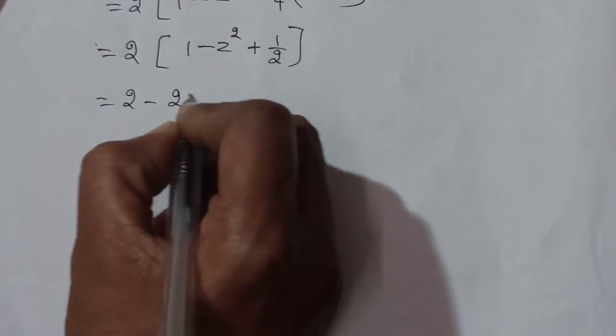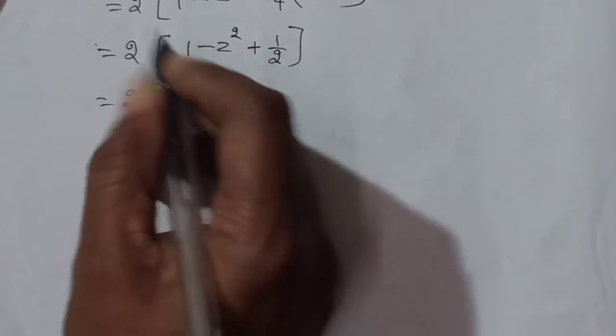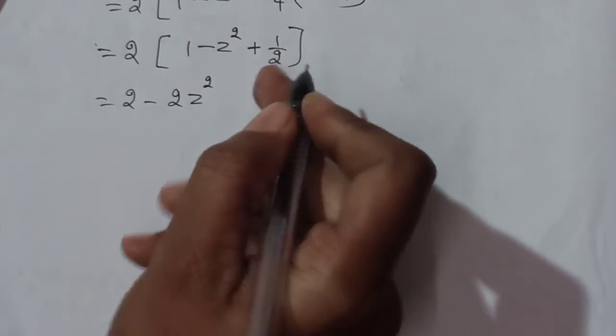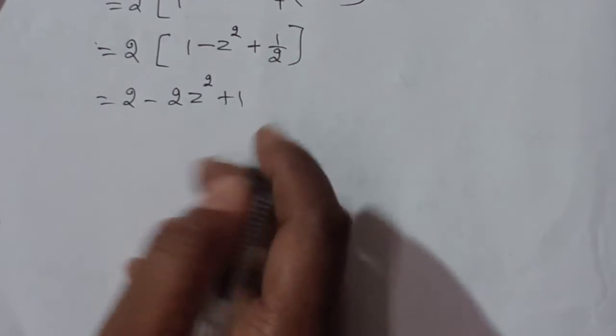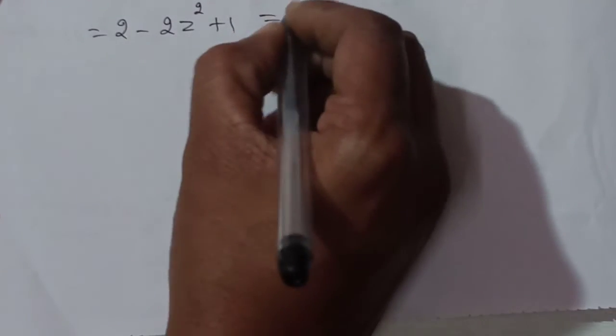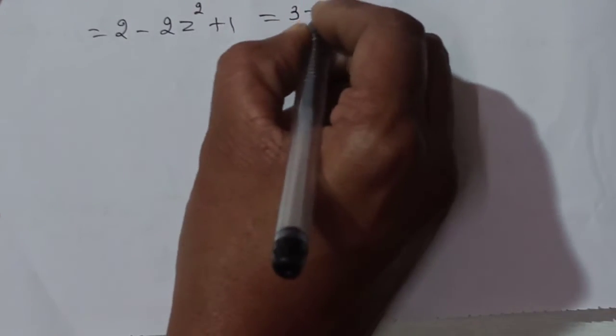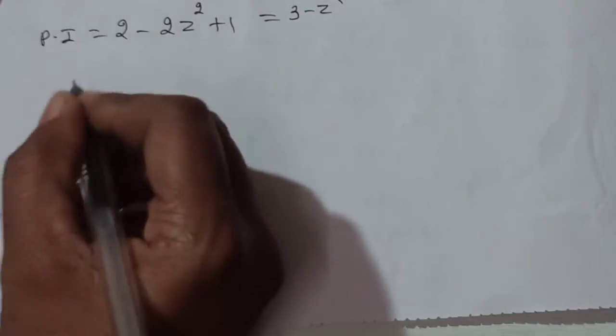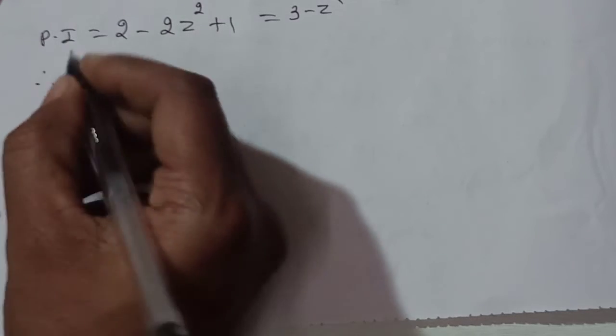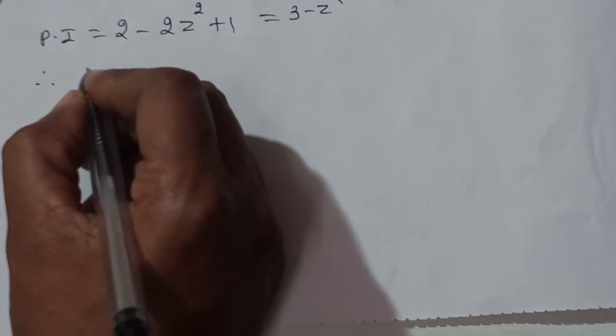Simplifying: PI = 2 − 2z² + 1 = 3 − z². This is the particular integral.